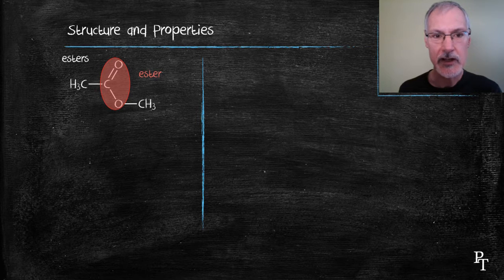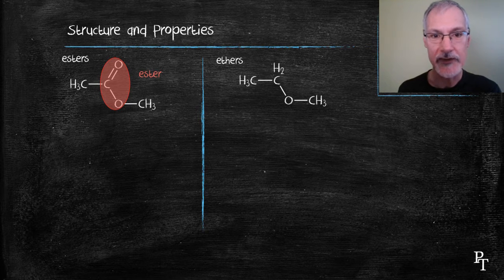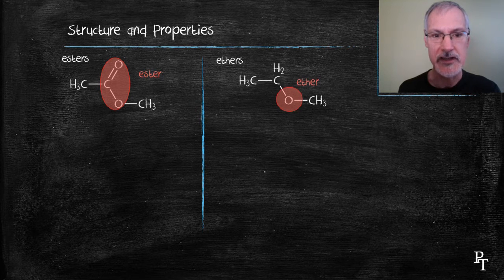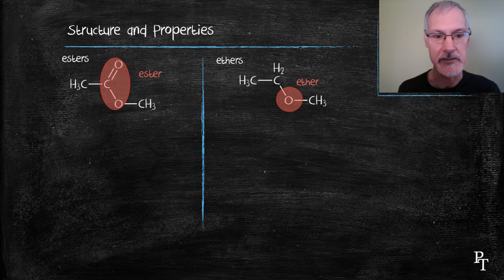Ethers on the other hand are missing the doubly bonded oxygen, however they do have that single oxygen that interrupts the carbon chain and that group there is identified as the functional group for the ether family.